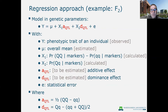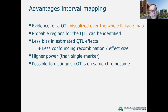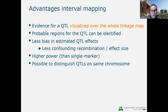In the F2 we have three genotypes and the model estimates two effects: the additive effect of the QTL, which is half the difference between the two homozygotes, and the dominance effect, which is the difference between the heterozygote and the midpoint of the two homozygotes. The advantages of interval mapping are that we can visualize evidence of a QTL over the whole linkage group, identify probable QTL regions, get less biased QTL effect estimates, achieve higher power, and distinguish multiple QTLs on the same chromosome.